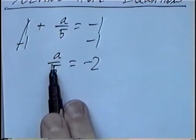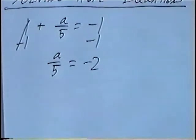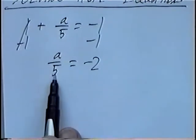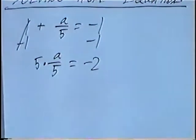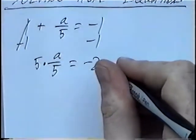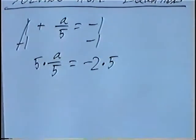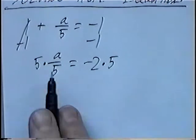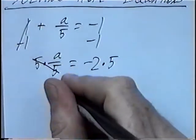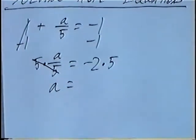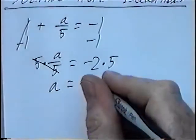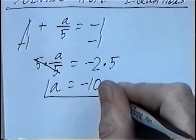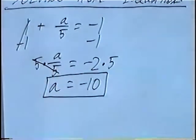From here we have a over 5 or a divided by 5. The opposite of dividing by 5 would be multiplying by 5, so we'll multiply both sides by 5. Multiply by 5 and divide by 5 would cancel out, so we'll be left with a. And negative 2 times 5 would be negative 10. So the answer a equals negative 10.